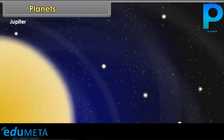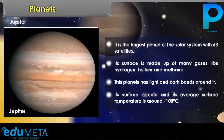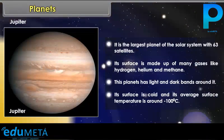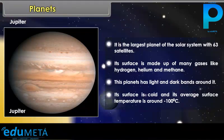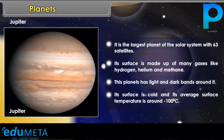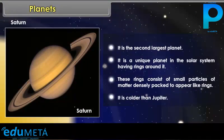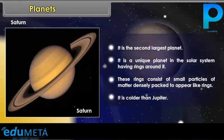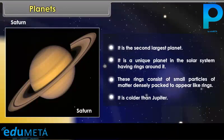Jupiter's surface is made up of many gases like hydrogen, helium and methane. This planet has light and dark bands around it. Its surface is cold with an average surface temperature of around minus 100 degrees Celsius. Saturn is the second largest planet and is a unique planet in the solar system having rings around it. These rings consist of small particles of matter densely packed to appear like rings. Saturn is colder than Jupiter.